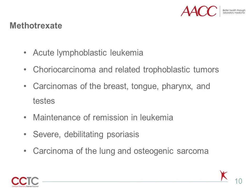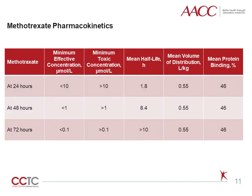High-dose methotrexate administration followed by leucovorin rescue is effective in treatment of carcinoma of the lung and osteogenic sarcoma. Methotrexate is a non-specific cytotoxin and prolongation of blood concentrations appropriate to killing tumor cells may lead to severe unwanted cytotoxic effects such as myelosuppression, gastrointestinal mucositis, and hepatic cirrhosis. Serum concentrations of methotrexate are commonly monitored during high-dose therapy to identify the time at which active intervention by leucovorin rescue should be initiated.